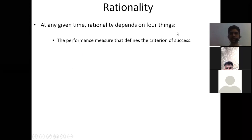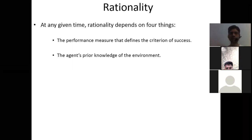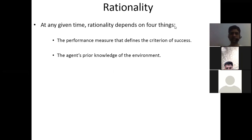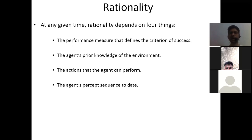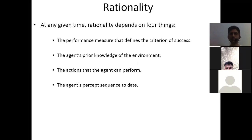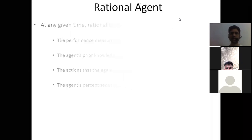The first point is the performance measure that defines the criteria of success. The second is the agent's prior knowledge of the environment — you must have some knowledge about the environment on which basis you decide or take decisions. The third point is the actions that the agent can perform — what are your capabilities, what your body and five senses allow you to do. The fourth is the agent's percept sequence to date — whatever sequence of actions you have done till now.